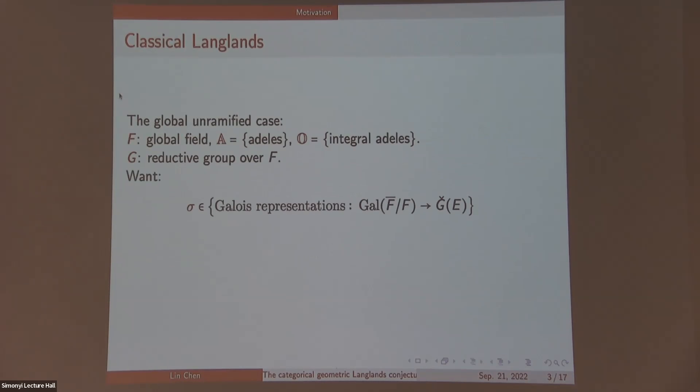The classical Langlands correspondence in number theory, maybe one way to formulate it is the following. Given a Galois representation sigma, which is a homomorphism from the absolute Galois group of F to G-check of E. Here G-check is the Langlands dual group, the reductive dual group of G, and E is a coefficient field.